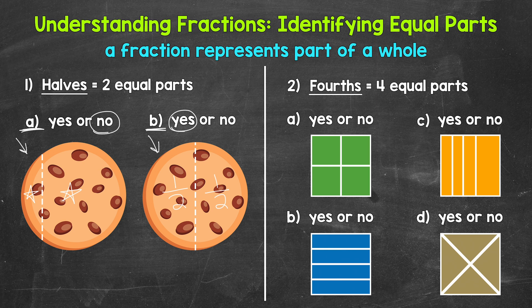Let's move on to number two, where we are going to look at fourths. Fourths means we have four equal parts. Let's start with A. Do we have fourths here — four equal parts, four parts that are the same size? Yes, we do have fourths here. All four parts are equal. Each part is one-fourth of the whole — this is one-fourth, this is one-fourth, this is one-fourth, and this is one-fourth. And all four of those one-fourths make up the whole.